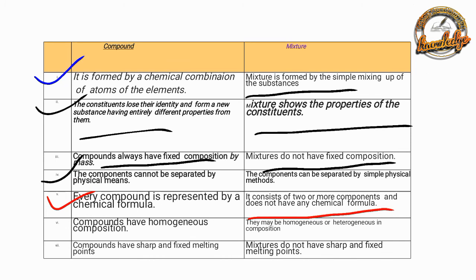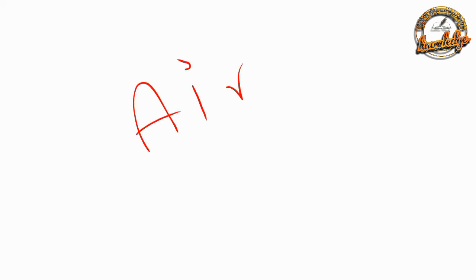A mixture does not have a chemical formula. A compound has a homogeneous composition — the same composition throughout. Examples include carbon dioxide gas.